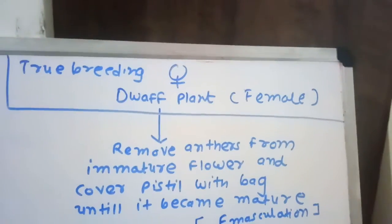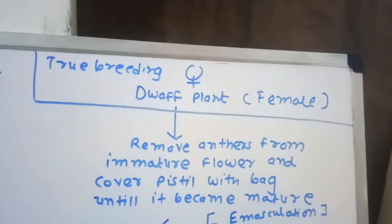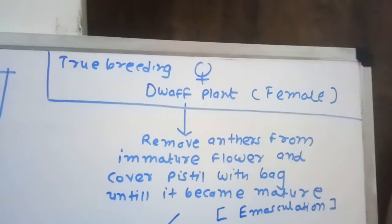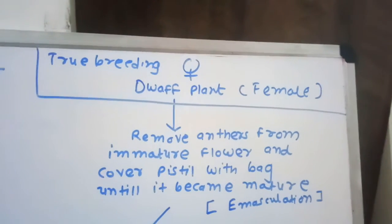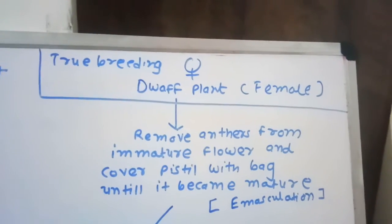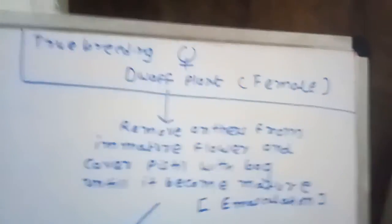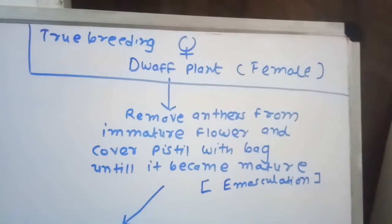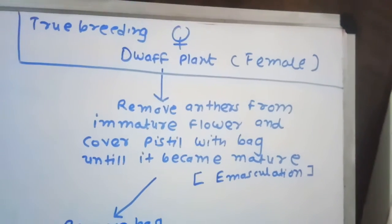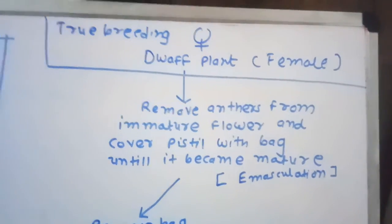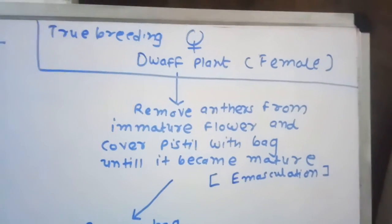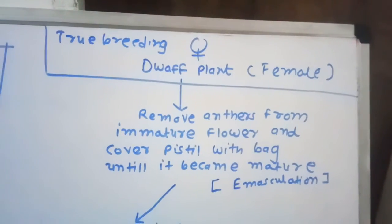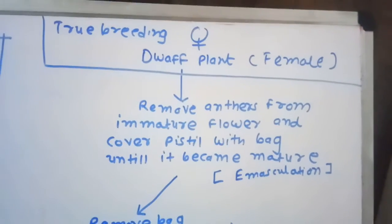To prevent self-pollination and achieve proper cross-pollination results, Mendel used the emasculation method. He used the female plant and prevented self-pollination from occurring. The flower was kept immature — at an immature stage, it cannot undergo self-pollination.